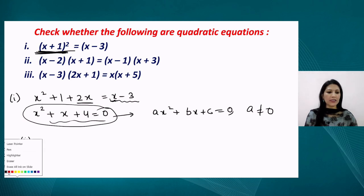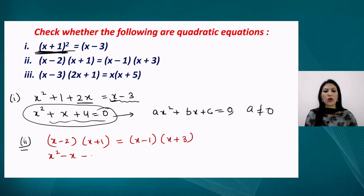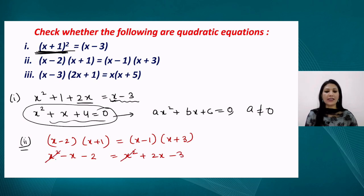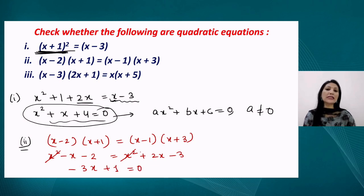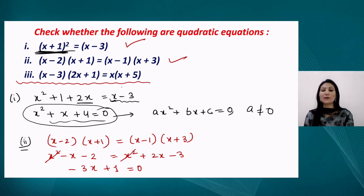The second part: (x − 2)(x + 1) = (x − 1)(x + 3). Multiplying the left side: x² − x − 2. Right side: x² + 2x − 3. Subtracting: the x² terms cancel, leaving −3x + 1 = 0. So the degree-2 terms have been eliminated, and the resulting equation has degree 1. Therefore, this is not a quadratic equation.